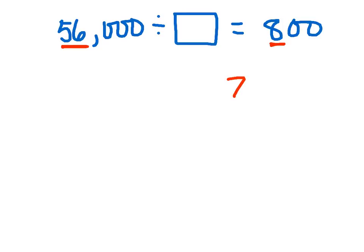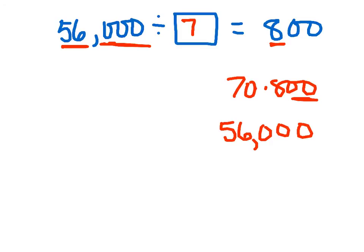So 7 times 800 is going to give me what? 56 plus 2 zeros, 3 zeros. So I'm going to need a total of 3 zeros here. So we're going to have to have 70 times 800 to get that 56,000. So we're thinking that 56,000 divided by 70 is going to be 800.